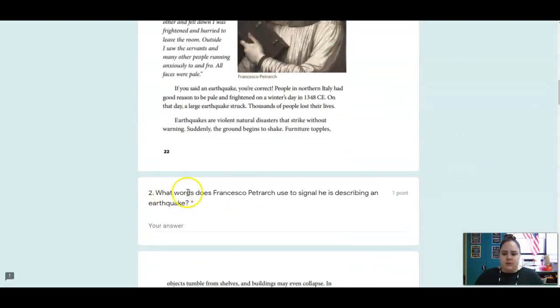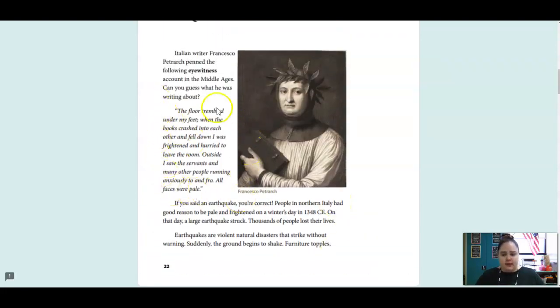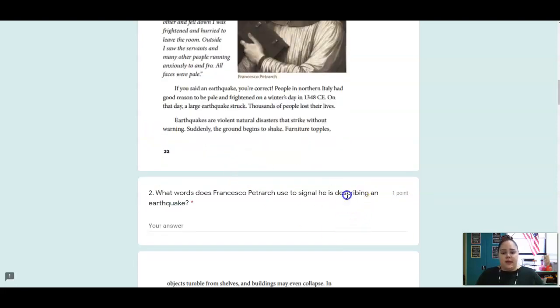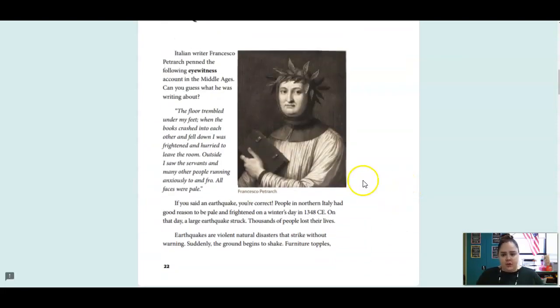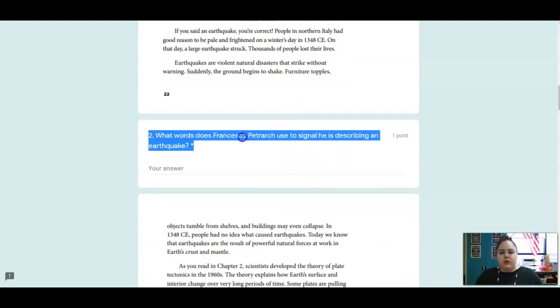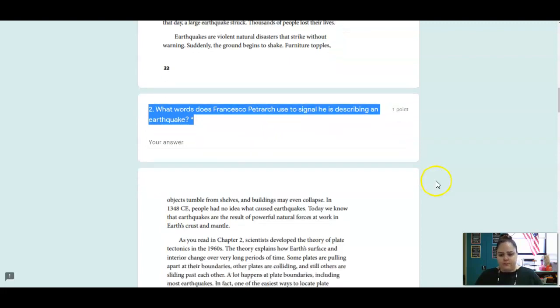The first question we're going to look at is, what words does Francesco Petrarch use to signal he's describing an earthquake? We read this last lesson. This is the passage where Francesco was writing about an earthquake experience in the Middle Ages. You're going to pull out the words that tell you how he's describing it. What words tell you that he is describing an earthquake?